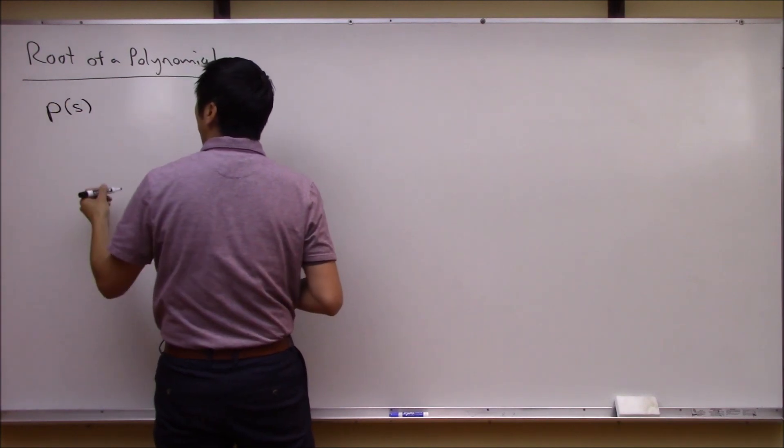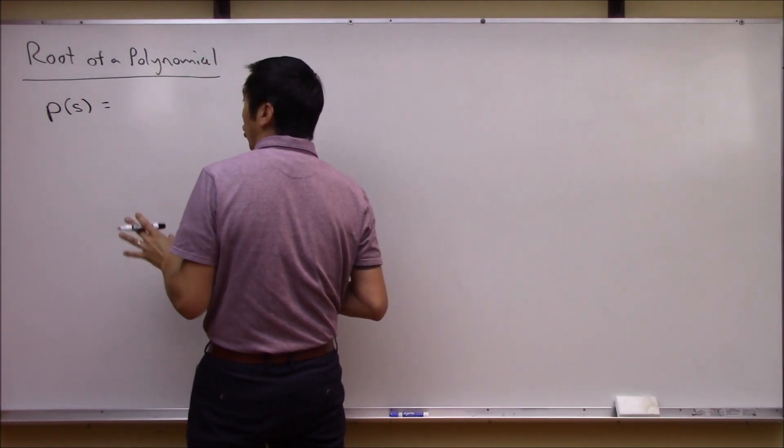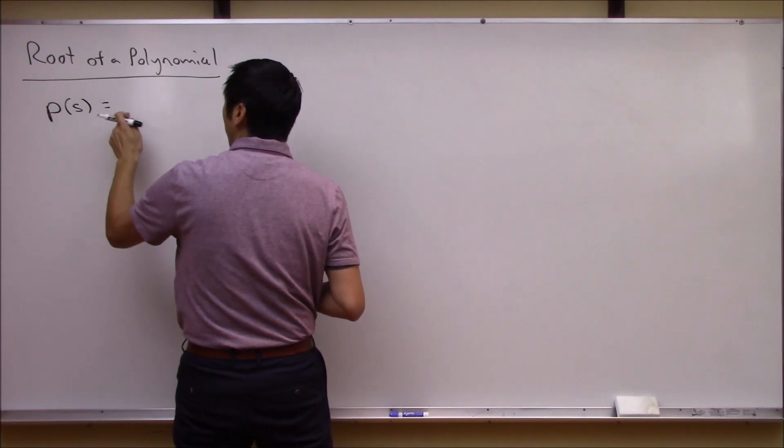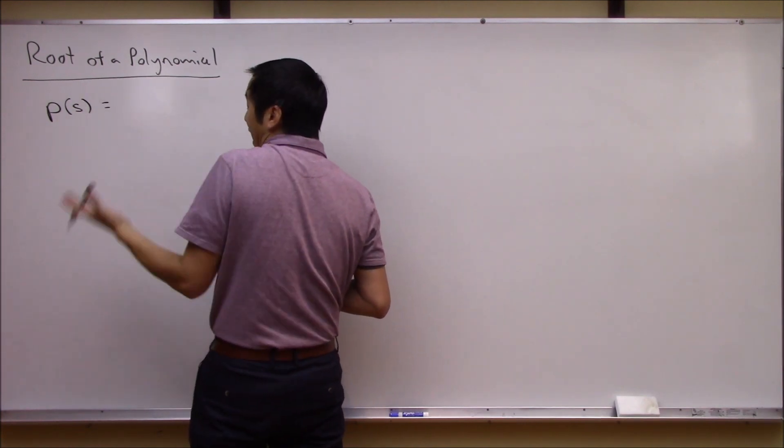The way we're gonna make up this polynomial is by taking powers of s and multiplying them by coefficients and then adding them up.